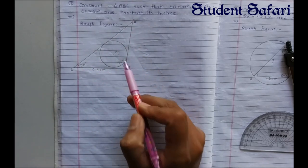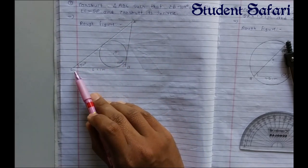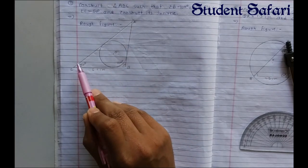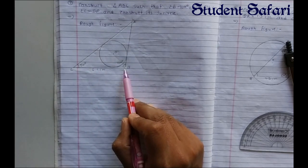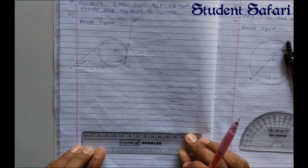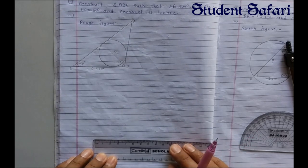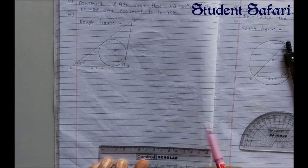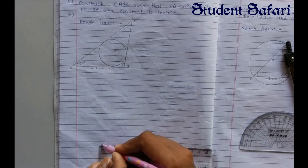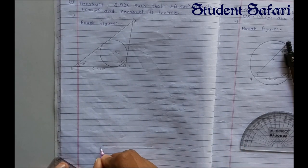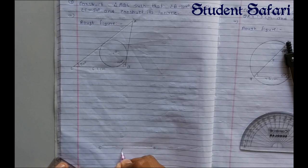First we will draw triangle ABC. We draw line BC, then take the measurement of angle C which is 50 degrees, then angle B which is 100 degrees. Our line BC is equal to 6.4 centimeters — draw line BC as 6.4 centimeters.